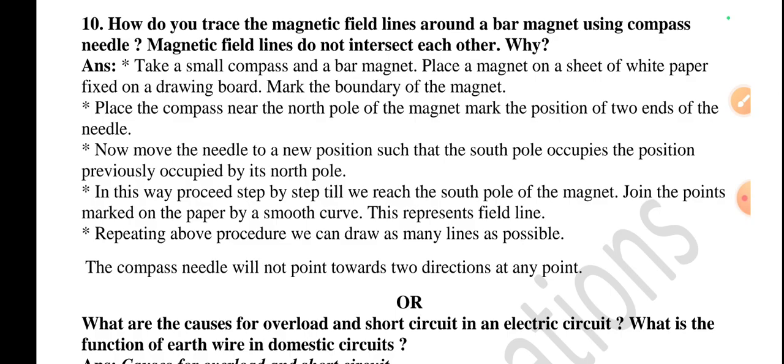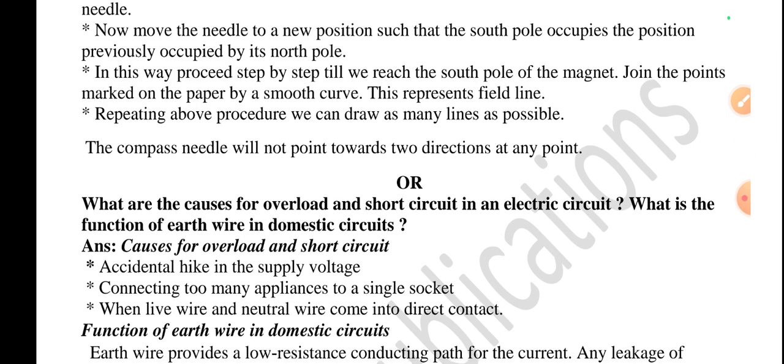Tenth question: How do you trace the magnetic field lines around a bar magnet using a compass needle? Why do magnetic field lines not intersect each other? Take a small compass and a bar magnet. Place the magnet on a sheet of white paper fixed on a drawing board. Mark the boundary of the magnet. Place the compass near the north pole of the magnet. Mark the position of the two ends of the needle. Now move the needle to the new position such that the south pole occupies the position previously occupied by its north pole. In this way, proceed step by step till we reach the south pole of the magnet. Join the points marked on the paper by a smooth curve. This represents a field line. Repeating the above procedure, we can draw as many lines as possible. The compass needle will not point towards two directions at a point because the lines do not intersect.